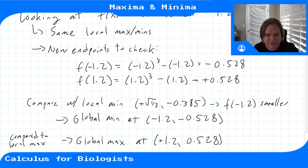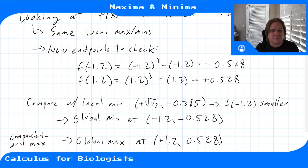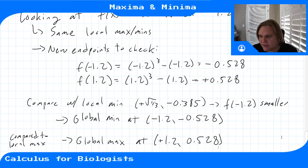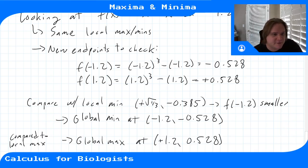This matches the graph: on the bigger interval, the local max and min are surpassed by the endpoint values because the function is going off to infinity on either side. But sometimes the function doesn't go to infinity, and a local max can still be the global max.